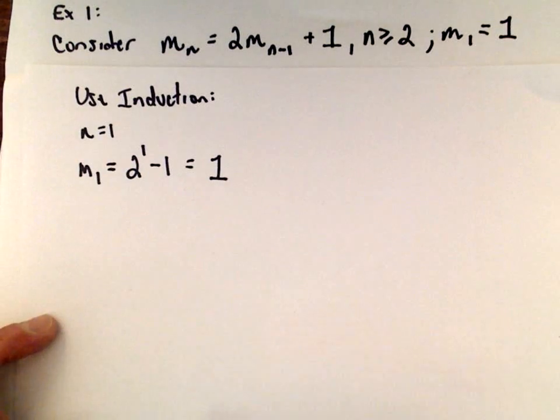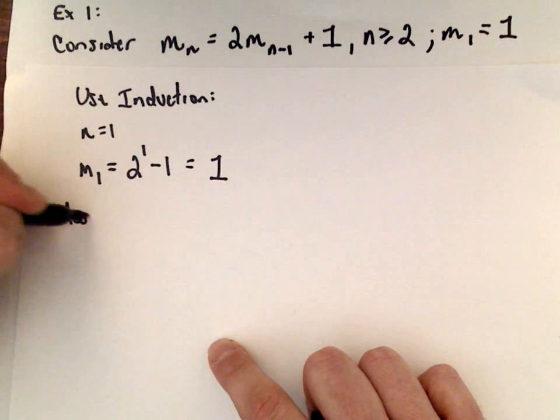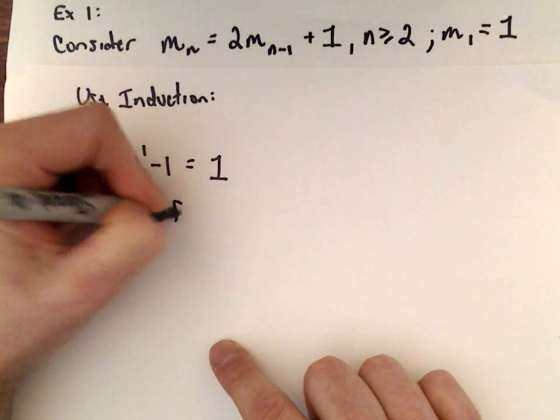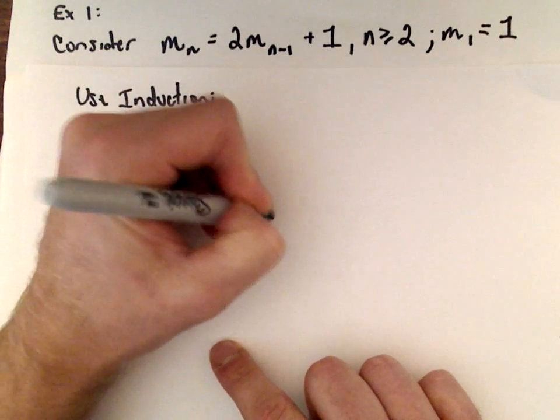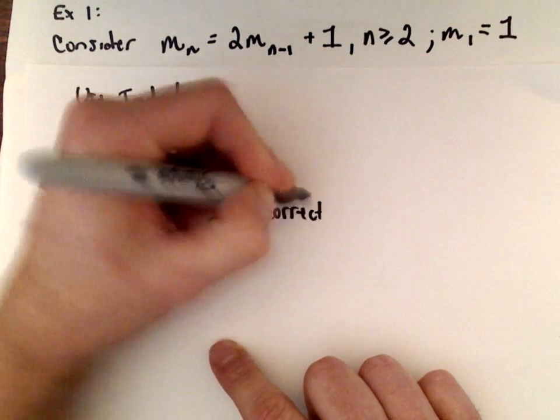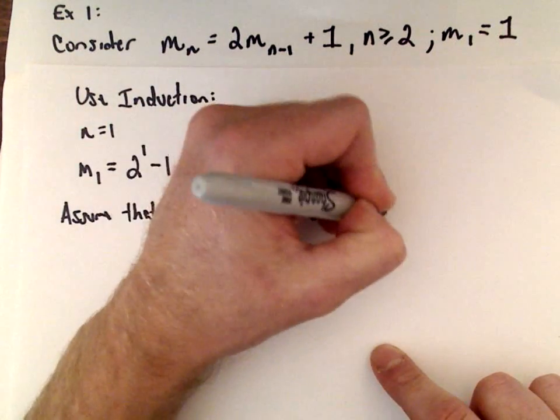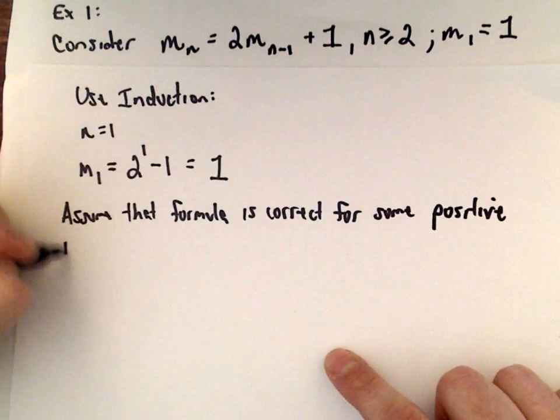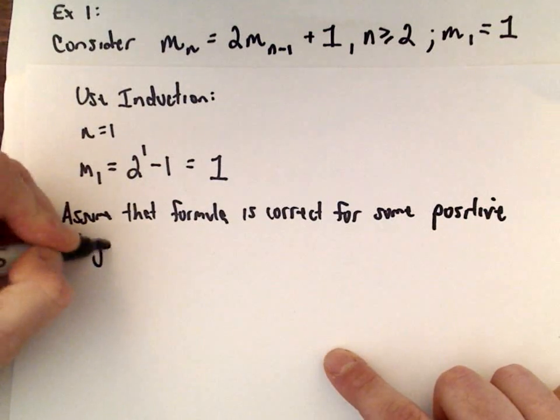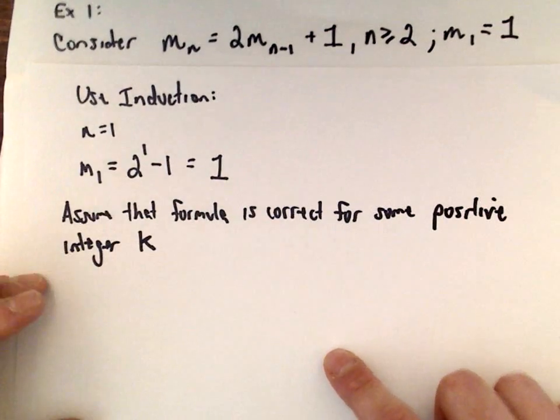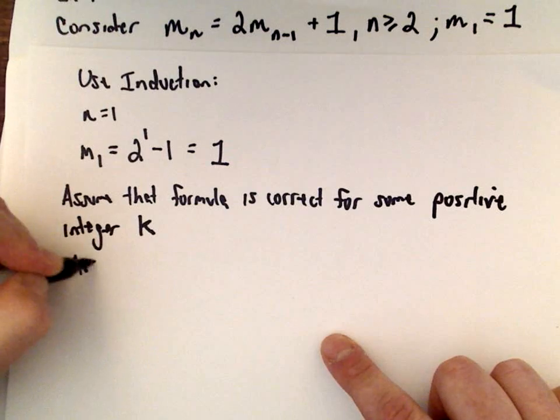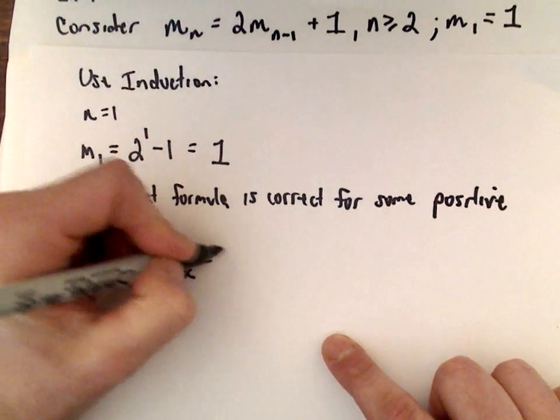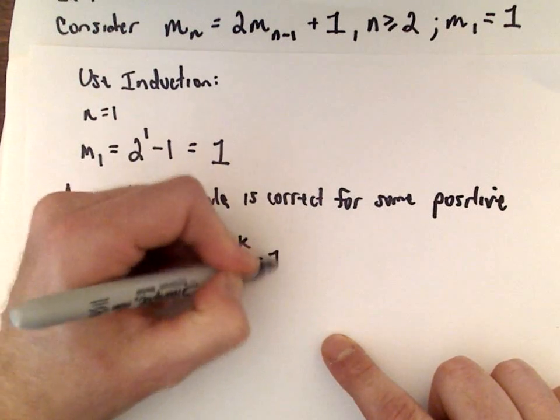Now we're going to assume that the formula is correct for some positive integer k. So we're assuming that m sub k equals 2 to the k minus 1 holds.